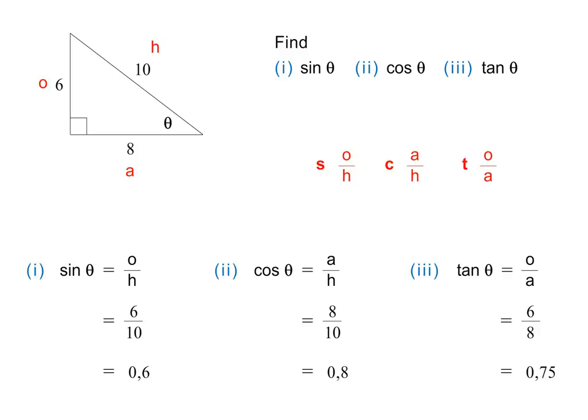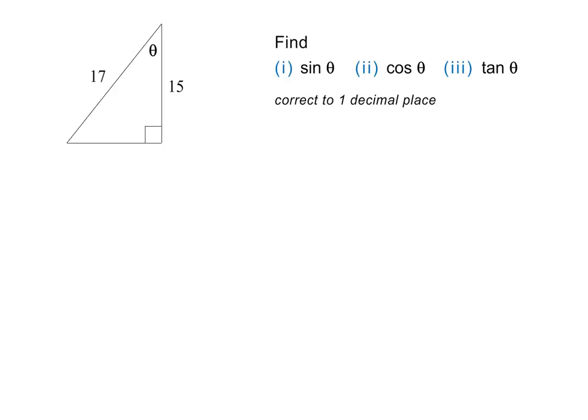Click pause if you need more time to check the working. Here is the next example. We are given another triangle and are asked to find the same three trig ratios. Again, we begin by identifying the sides. The hypotenuse lies opposite the right angle, adjacent lies next to theta, and opposite lies opposite theta. But we have a problem — the length of the opposite side has not been given. Because this is a right-angled triangle, we can use Pythagoras to find the length of O. We write that O squared plus 15 squared equals 17 squared, which means O equals the square root of 17 squared minus 15 squared. This gives an answer of 8, which we write in on the triangle.